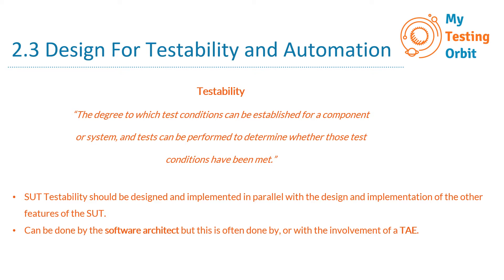This can be done by a software architect, but it is often done with the involvement of the TAE. The test automation engineer's involvement is important because they are someone who is working on the test automation for that system — familiar with what features need to be automated and what the approach would be. In conjunction with the software architect, the test automation engineer would be the best person to advise what capabilities are required in the system in order to automate specific features.